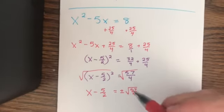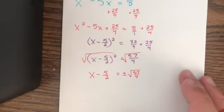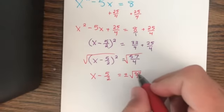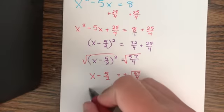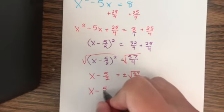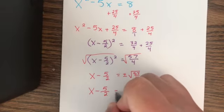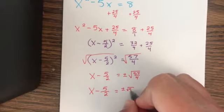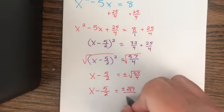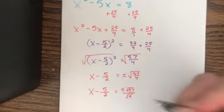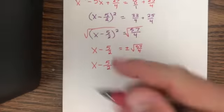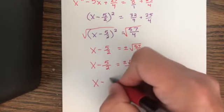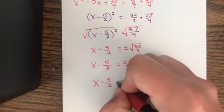We can't have a fraction under the radical - we've got to use our quotient rule. x - 5/2 equals plus or minus the square root of 57 over the square root of 4. The square root of 4 is just 2, so x - 5/2 equals plus or minus √57/2.